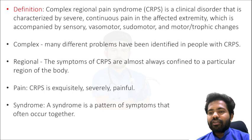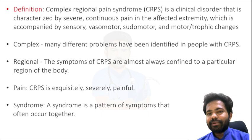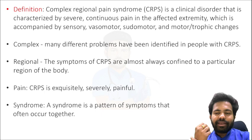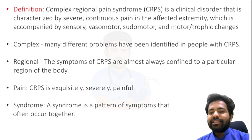Why is it called 'complex'? Because many different problems have been identified in people with CRPS. Why is it 'regional'? Because the symptoms of CRPS are almost always confined to a particular region in the body — for example, the hand, foot, leg, or arm. CRPS pain is very severely painful, and it is a syndrome — a pattern of symptoms that often occur together.